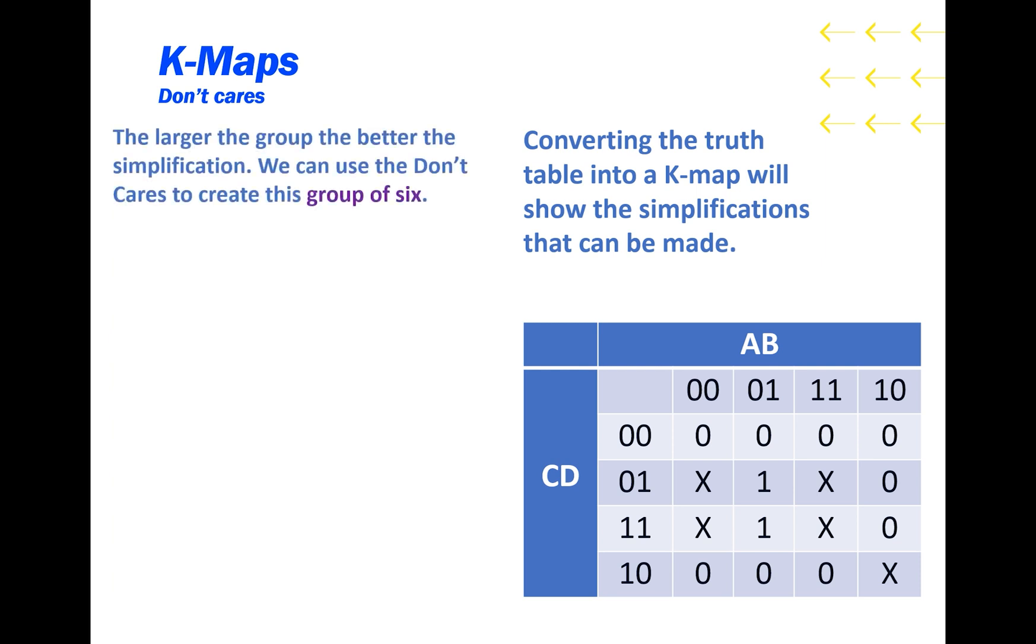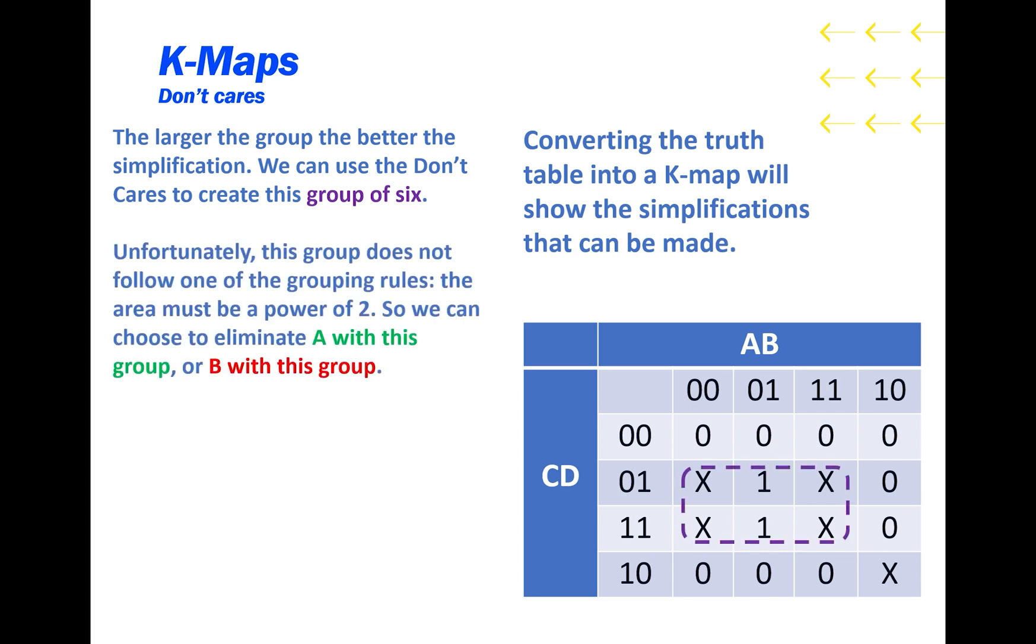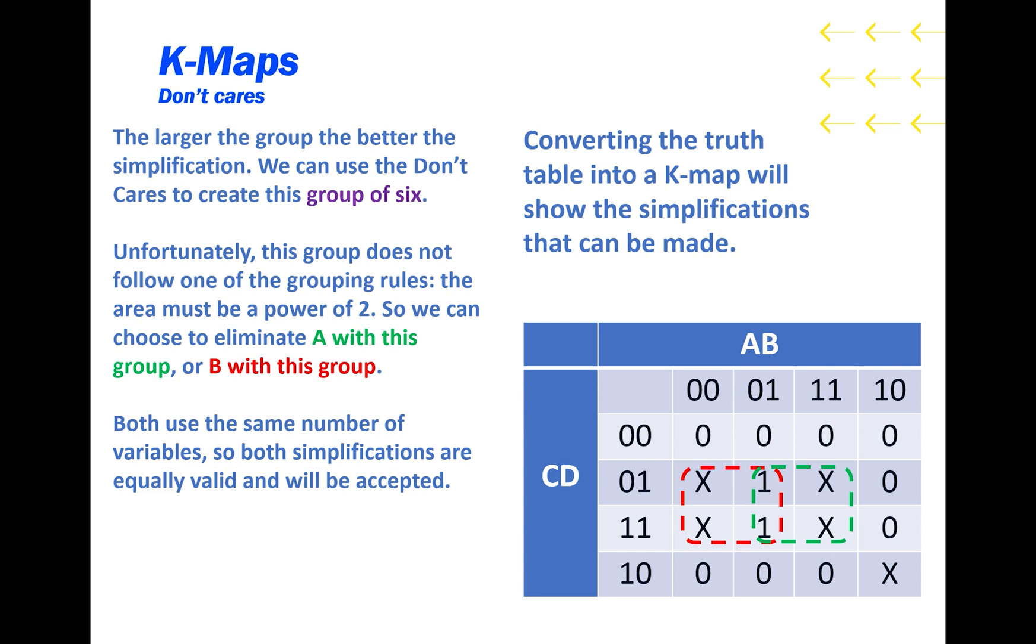Converting the truth table into a K-map will show the simplifications that can be made. The larger the group, the better the simplification. We can use the don't cares to create this group of 6. Unfortunately, this group does not follow one of the grouping rules, that being the area must be a power of 2. So we can choose to eliminate the A variable with this group, or the B variable with this group. Both use the same number of variables, so the simplifications are equally valid and both will be accepted. Meaning a reduced function is either B and D, or A' and D.